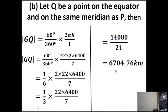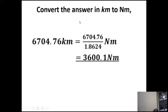But remember, we are asked how many nautical miles. Since we have gotten the distance in kilometers, we convert it to nautical miles. We divide 6,704.76 kilometers by 1.8624 kilometers, so our answer will be in nautical miles. We get 3,600.1 nautical miles. Solve it yourself and you should get 3,600.1 nautical miles.